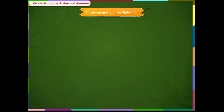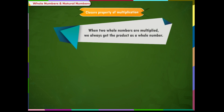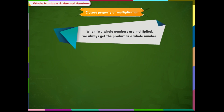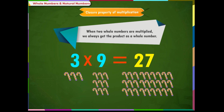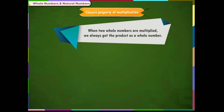Closure property of multiplication: When two whole numbers are multiplied, we always get the product as a whole number. For example, three multiplied by nine is equal to twenty-seven, which is a whole number.